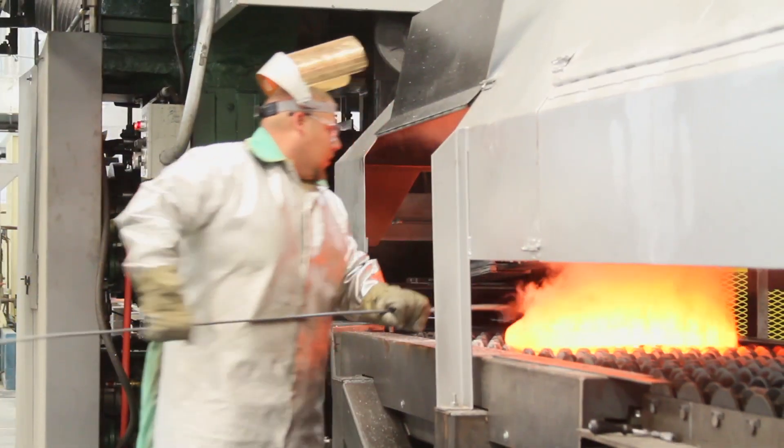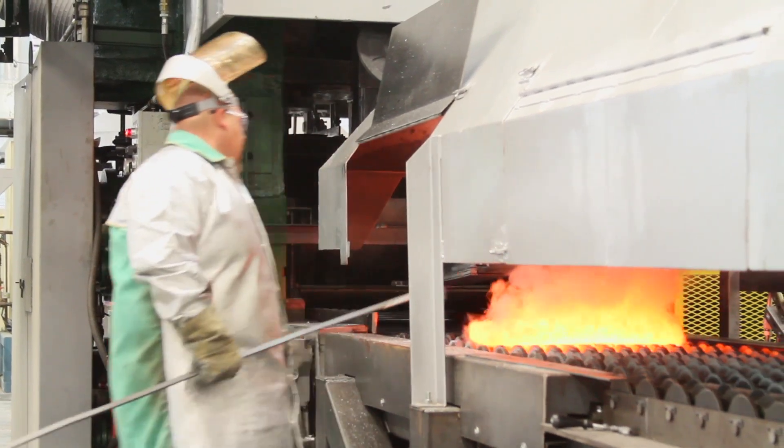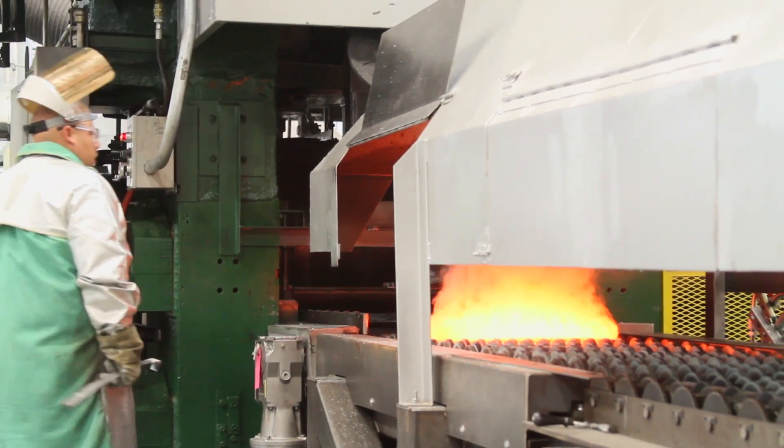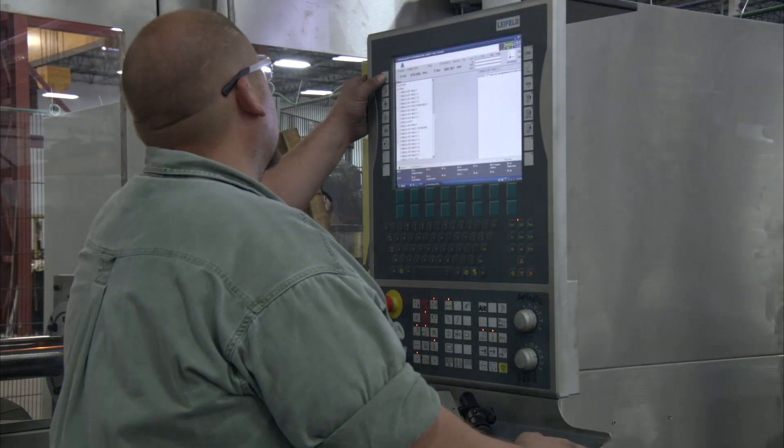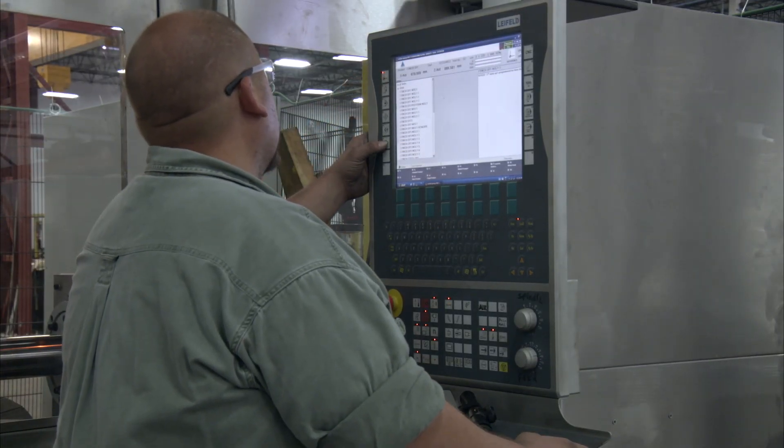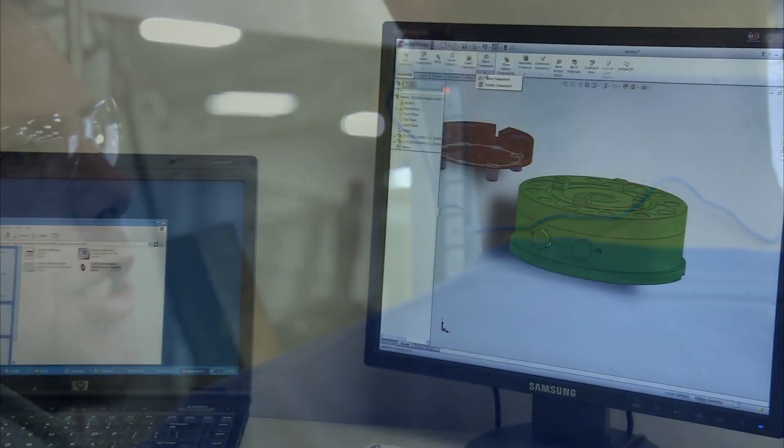All manufacturing is performed under the AS9100, ISO 9001, and ISO 14001 quality and environmental programs. At Elmet, we continually invest in new processes and capabilities to meet our customers' expectations for quality and delivery.